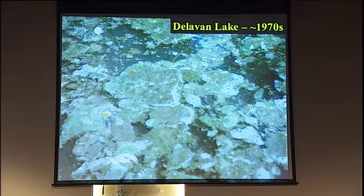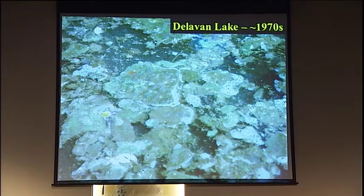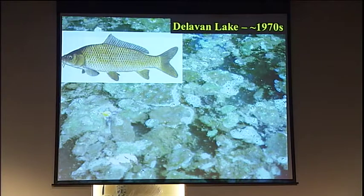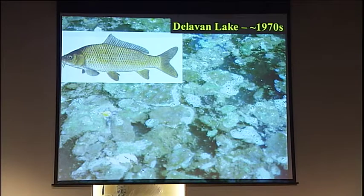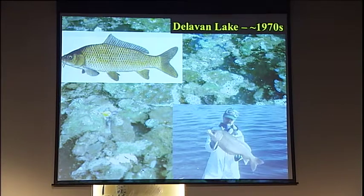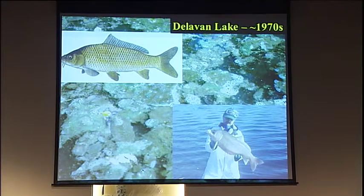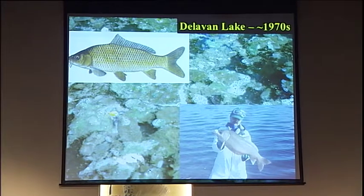Through time, that lake really got in bad shape. This is an algal bloom that occurred on the lake — this is a really bad blue-green algae bloom. On top of that, the fishery, which used to be a fairly good fishery with a lot of game fish, turned into one dominated by carp and bigmouth buffalo. Both of those are trash fish — they're really considered trash fish and not ones that people liked at all.